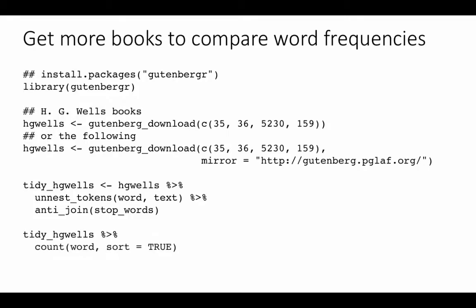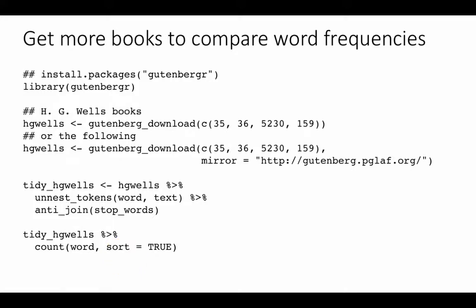Once you have this, you can count the words for tidy HG Wells — for example, 'tidy_HGWells %>% count_words(sort = TRUE)'. We've already removed stop words, so you'll get the top words used by HG Wells and can compare them with the top words used by Jane Austen. The two authors write about fairly distinct things: Jane Austen covers typical Victorian stories, while HG Wells wrote in a different genre at a much later period in time.